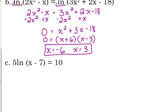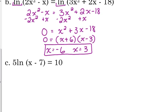This one does not have a natural log on both sides. 5 natural log of x minus 7 is equal to 10. So we've got to start by getting the natural log by itself. In this case, it's being multiplied by 5, so we're going to divide both sides by 5. So the natural log of x minus 7 is equal to 2.